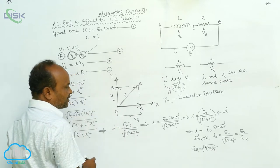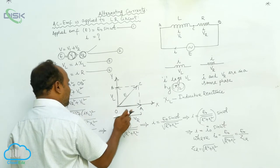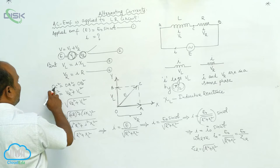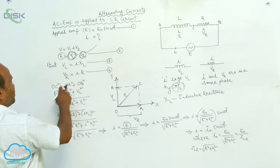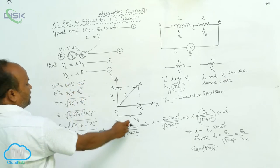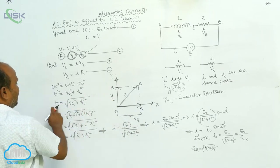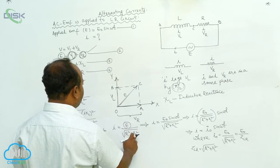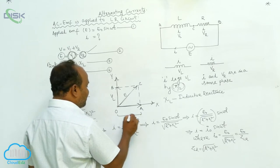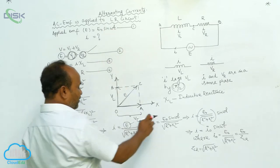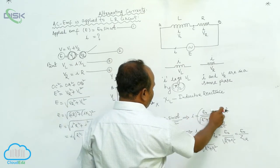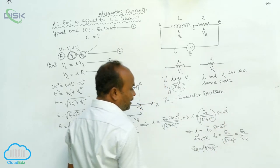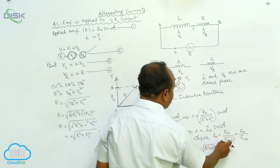The resultant of VR and VL, which are mutually perpendicular, gives the total EMF. In the vector diagram, OC² = OA² + OB². Therefore, E² = VR² + VL², and E equals the square root of VR² + VL². On substituting the values, i equals e divided by the square root of R² + XL². Since EMF e equals E₀ sin(ωt), substituting gives i equals E₀ / √(R² + XL²) × sin(ωt). This is comparable with i equals i₀ sin(ωt), so i₀ equals E₀ divided by the square root of R² + XL².